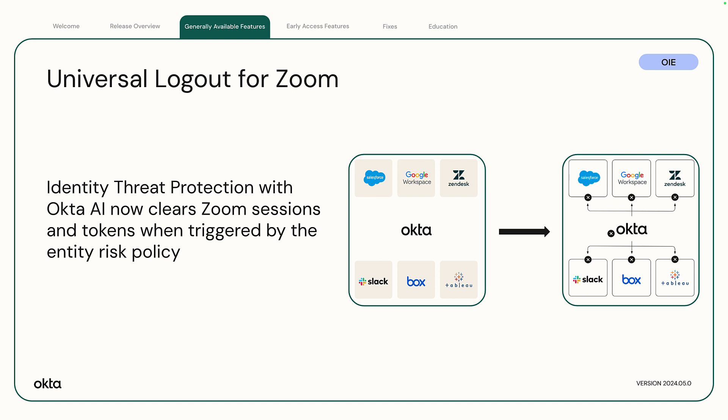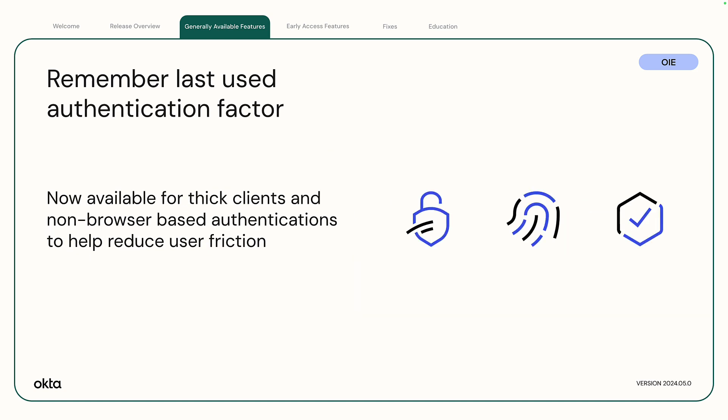It also forces end users to re-authenticate in case of a security or risky event. Remember last used authentication factor. Okta helps reduce user friction by prompting for the last used authentication factor. Previously, this was only available to those signing in through a web browser. Now, the last used authentication factor functionality is also available for thick clients and non-browser-based authentications.